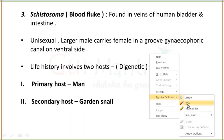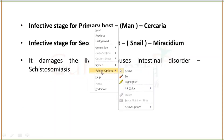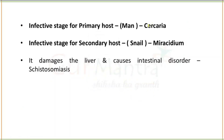Blood fluke — Schistosoma — is found in the veins of the human bladder and intestine. It is unisexual — sexes are separate. The larger male carries the female in a groove called the gynecophoric canal on the ventral side. Its life history involves two hosts — digenetic. Primary host is man; secondary host is garden snail. The infective stage for the primary host is Cercaria larva; for the secondary host it is Miracidium.